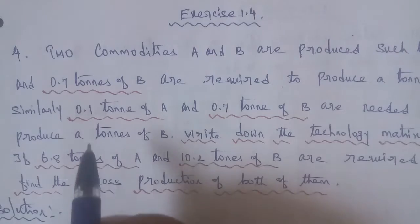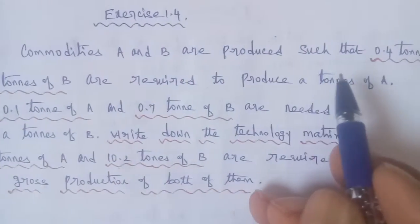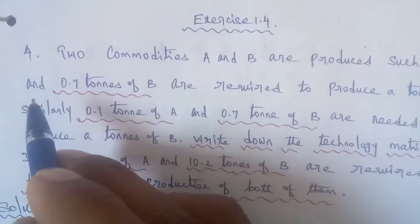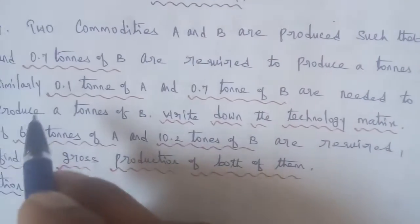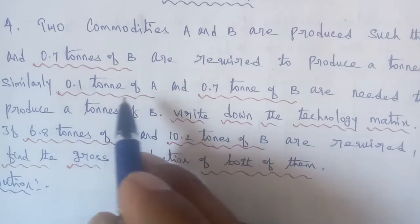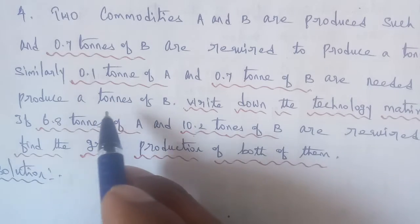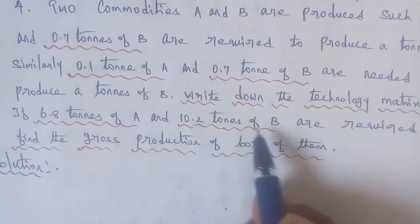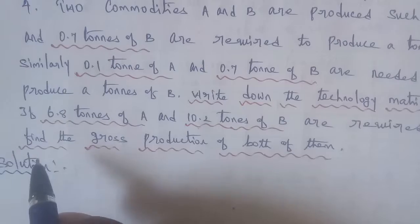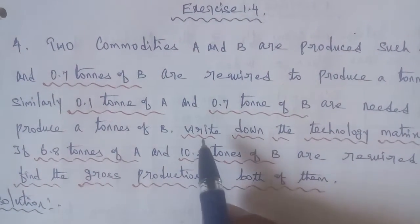Exercise 1.4, question number four. Two commodities A and B are produced such that 0.4 tons of A and 0.7 ton of B are required to produce a ton of A. Similarly, 0.1 ton of A and 0.7 ton of B are needed to produce a ton of B. Write down the technology matrix. If 6.8 ton of A and 10.2 ton of B are required, find the gross production of both.